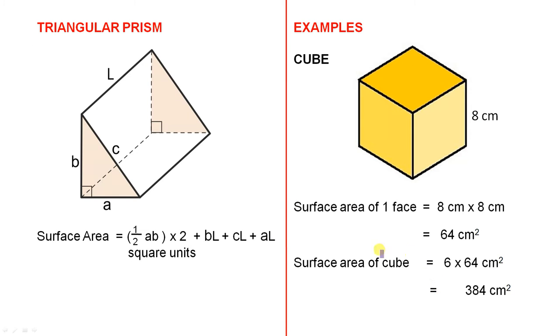For the triangular prism, we have a right angle triangle here with a base of A, a height of B, the hypotenuse is C, and we have L for the length. And it is a prism, because that triangle and that triangle are exactly the same, and they're joined by lines.